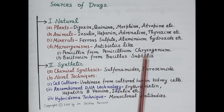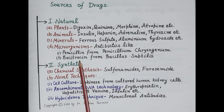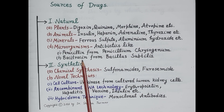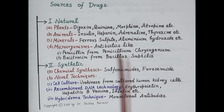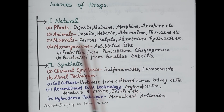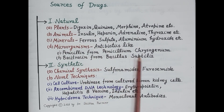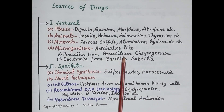For example, penicillin is derived from a fungus called Penicillium chrysogenum. Then bacitracin is an antibiotic obtained from a bacterium called Bacillus subtilis. So these are some very important natural sources of the drugs.